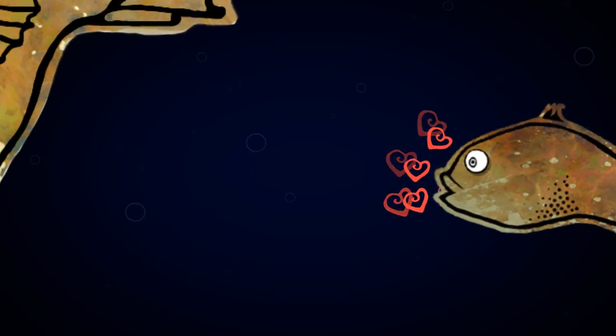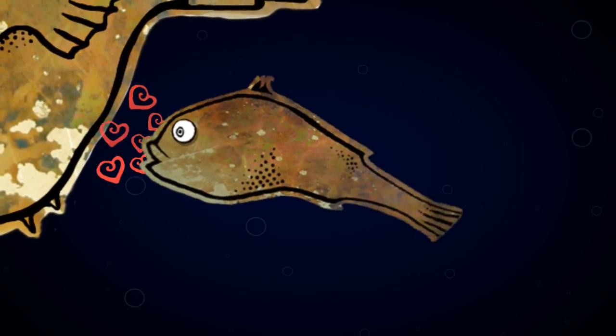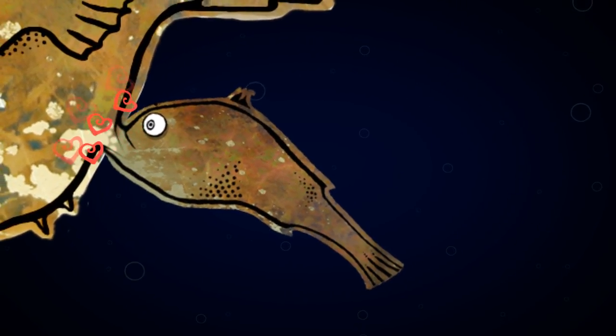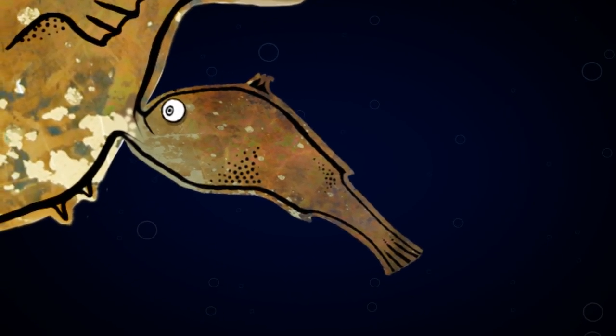Some male anglerfish, like Andy, live solely to find and mate with a female. When he finds a female, he bites into her skin and releases an enzyme to digest the skin of his mouth and her body.